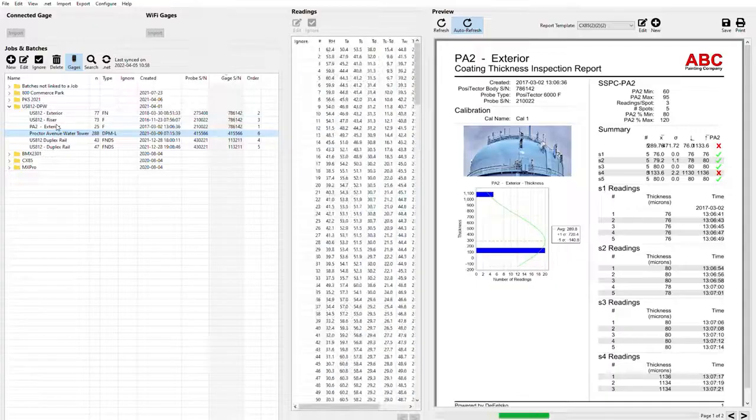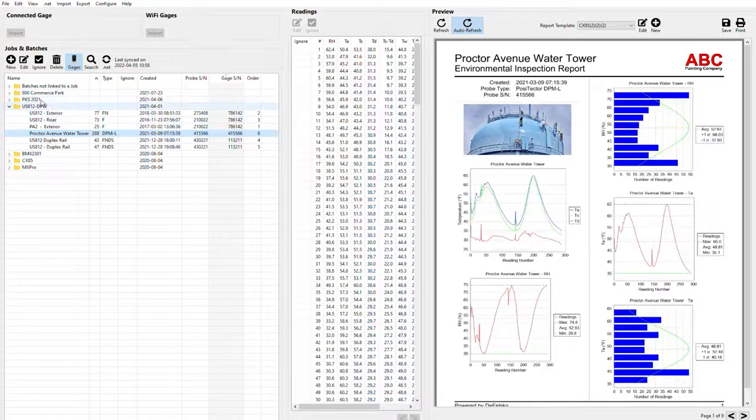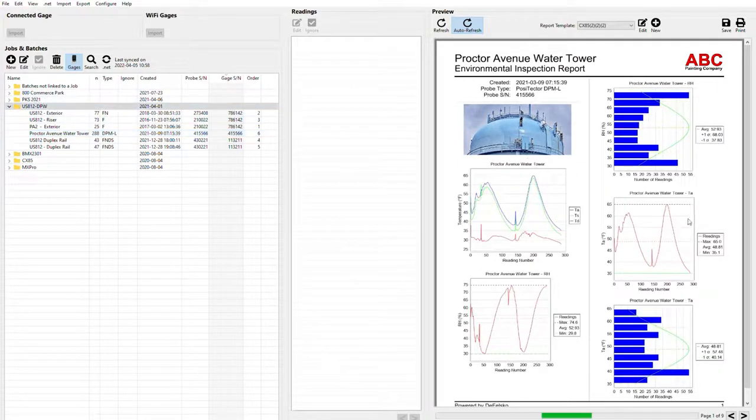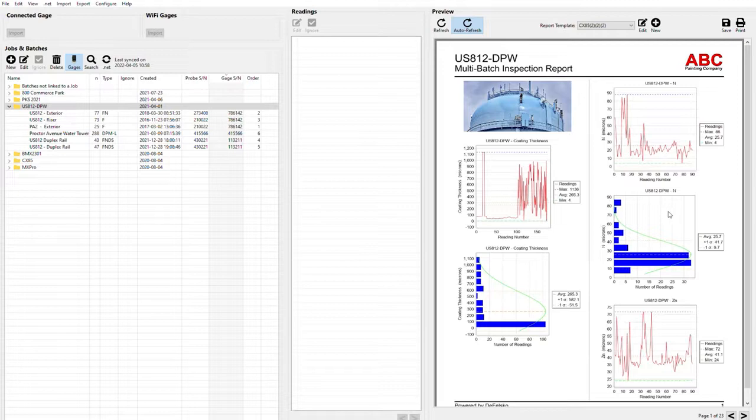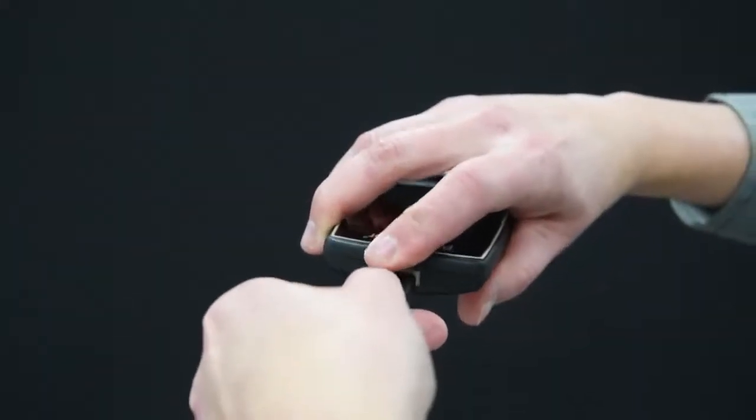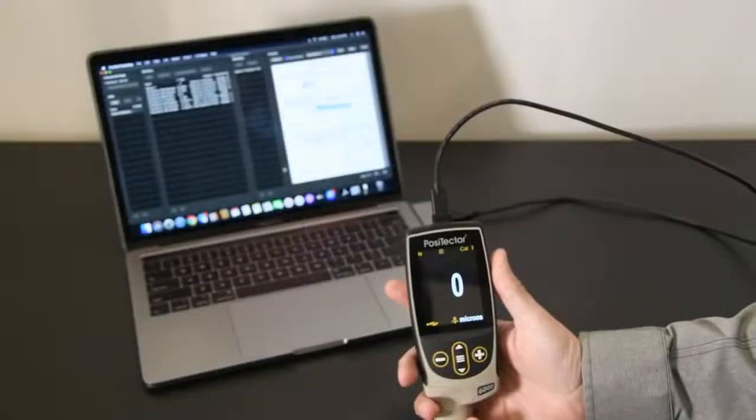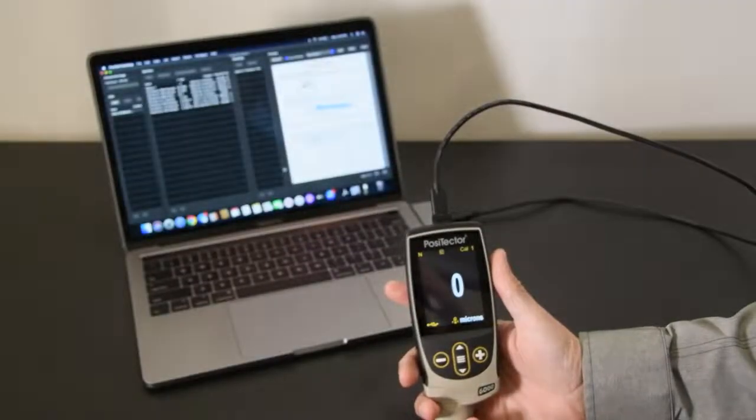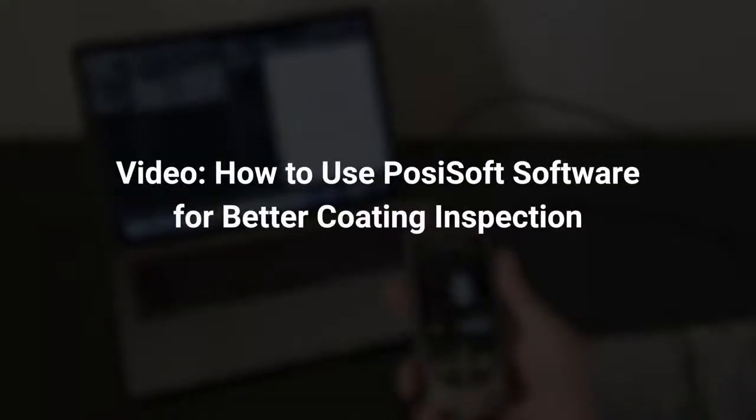Once measurements have been saved, PosiTector software makes it easy to manage data from multiple probes and create professional, custom reports. Simply connect the USB cable or join the same Wi-Fi network as your computer, import your readings, and quickly save a PDF report. Learn more about PosiTector software in the how to use PosiTector software for better coating inspection video.